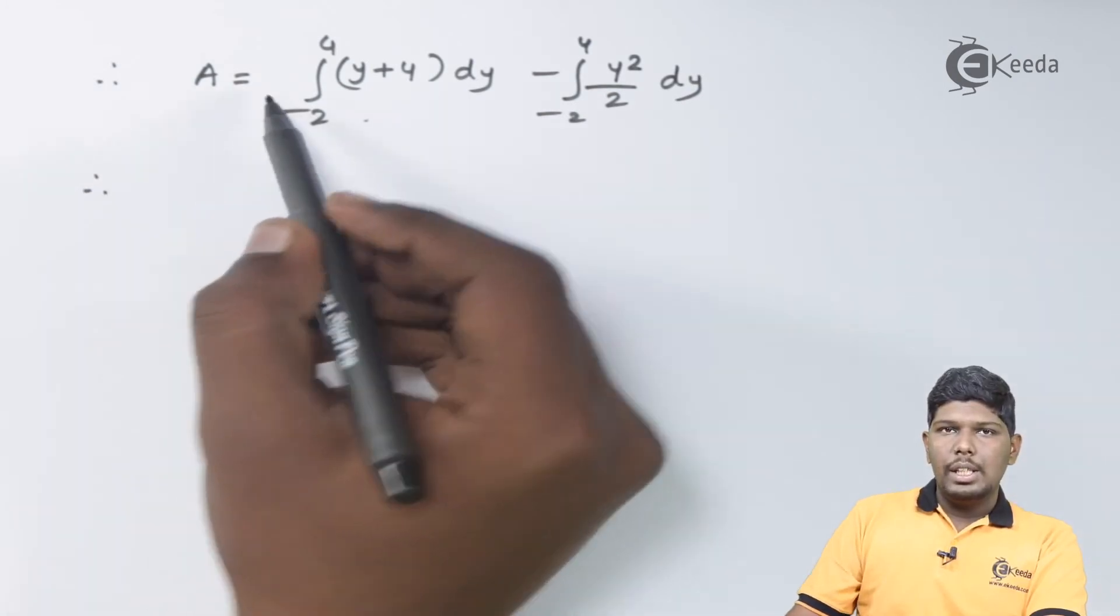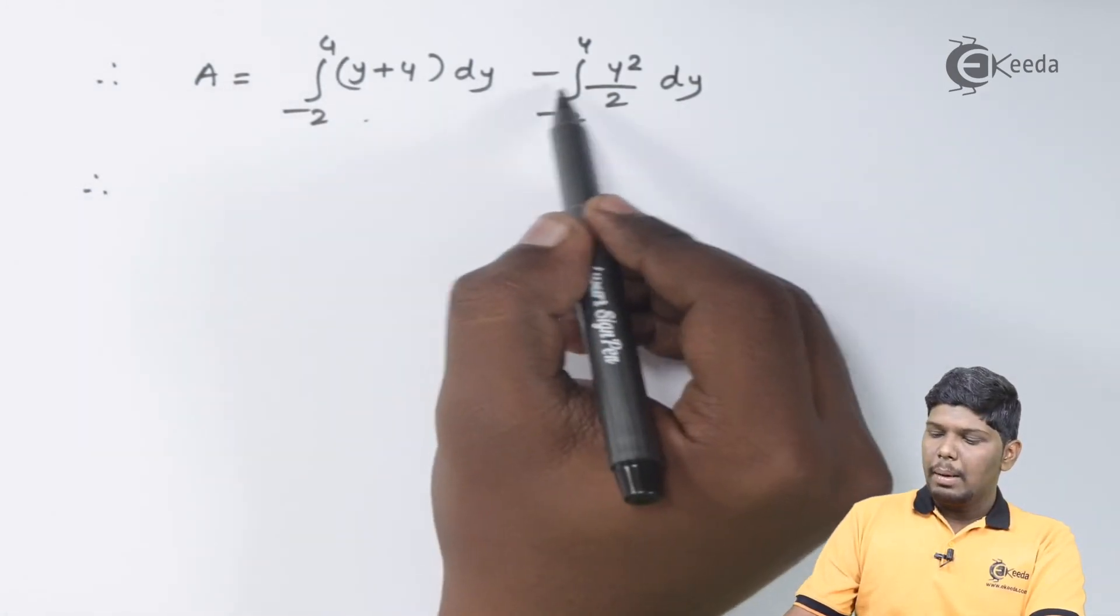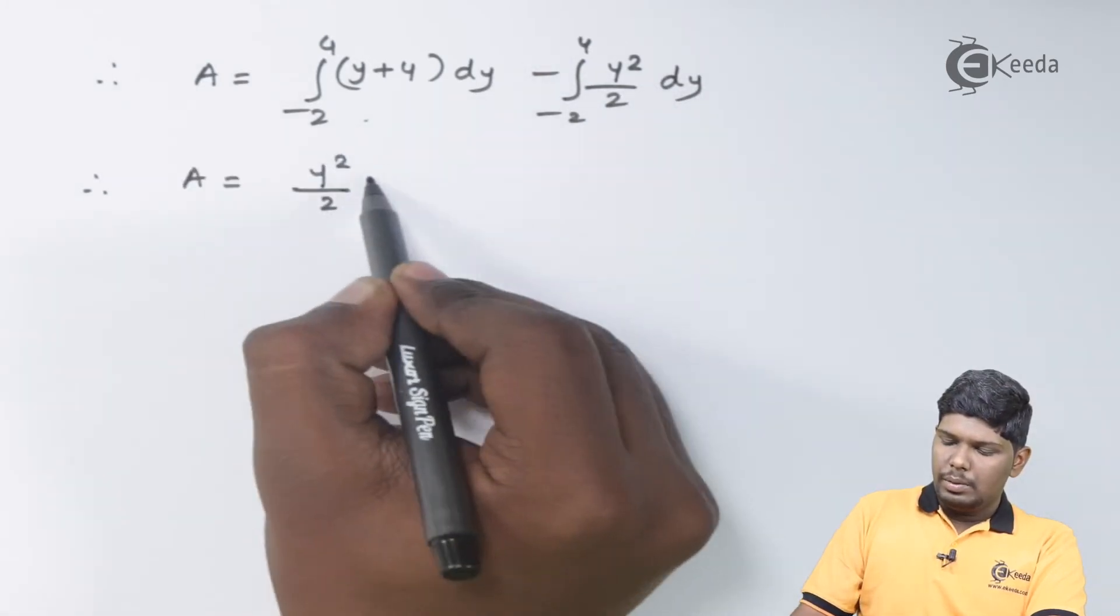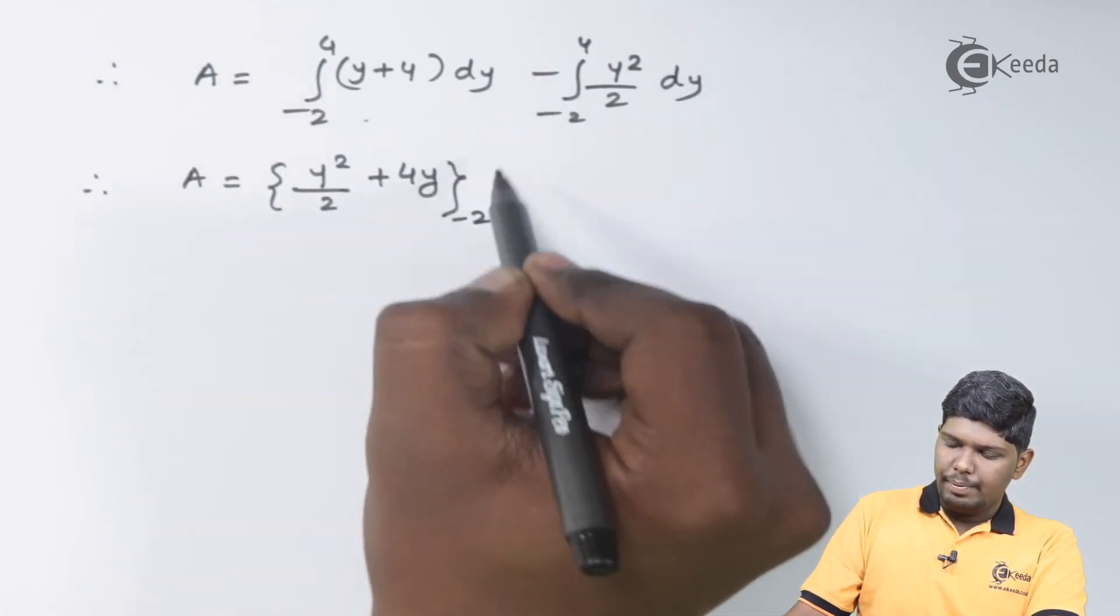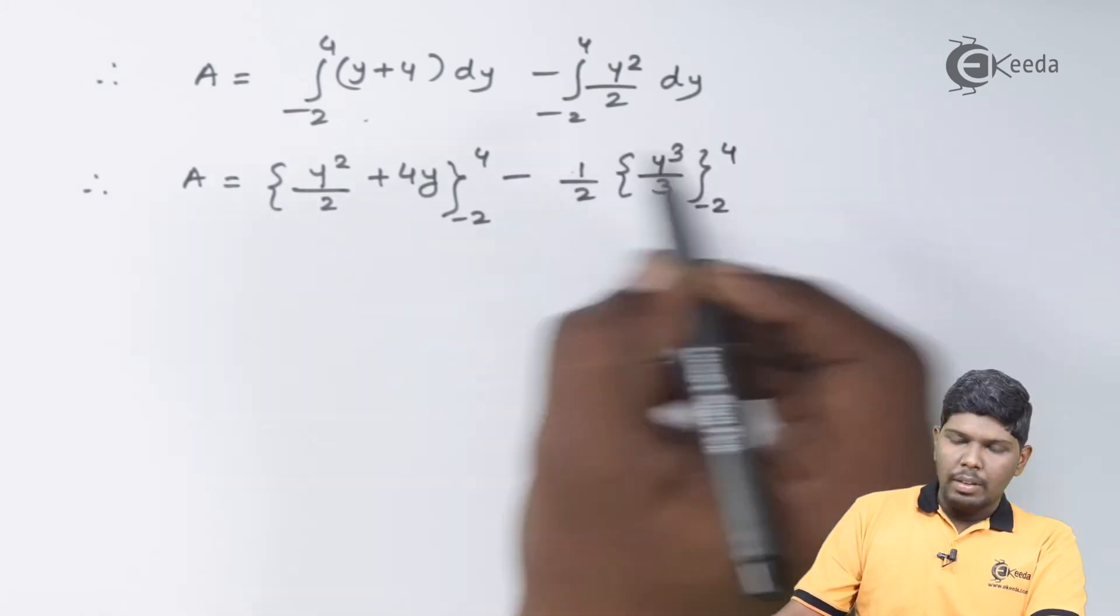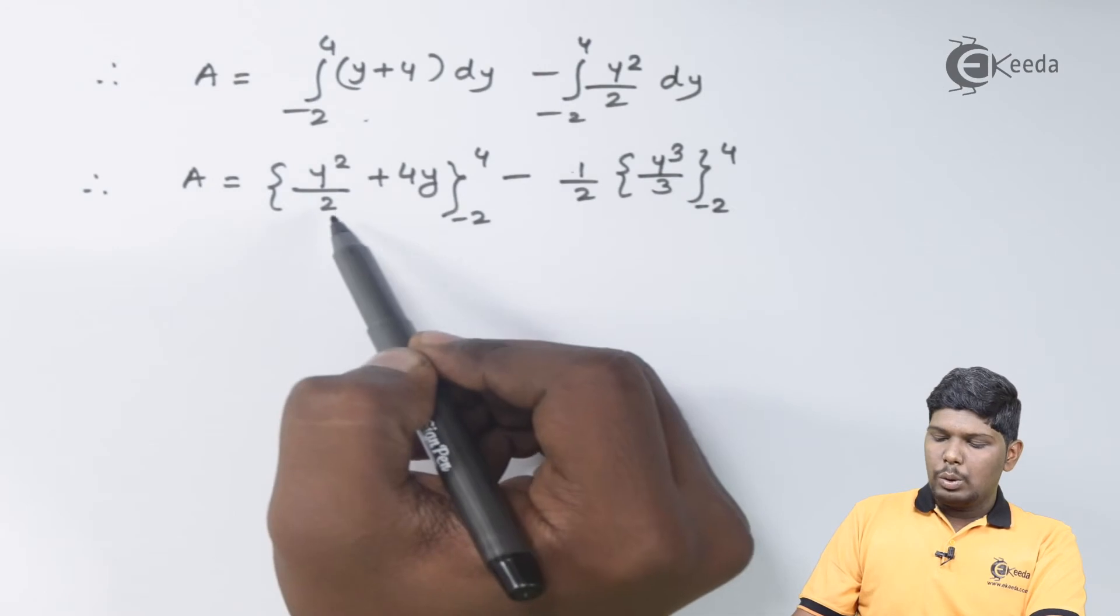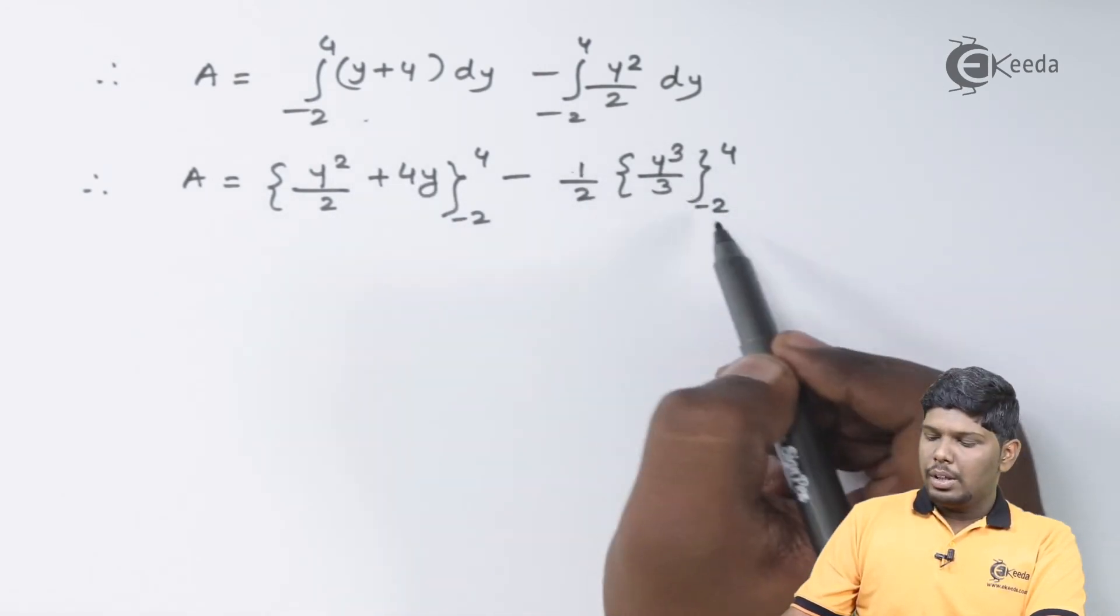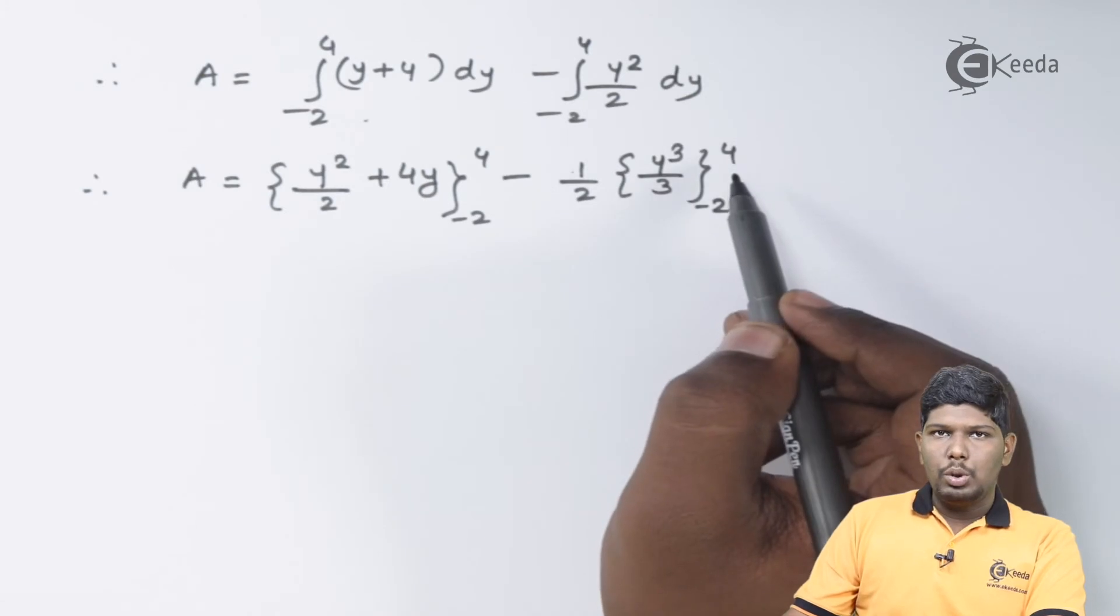So we have A = ∫_{-2}^{4} (y + 4) dy - ∫_{-2}^{4} (y²/2) dy. So its integration will be y²/2 + 4y - (1/2)(y³/3), both are within limits -2 to 4.